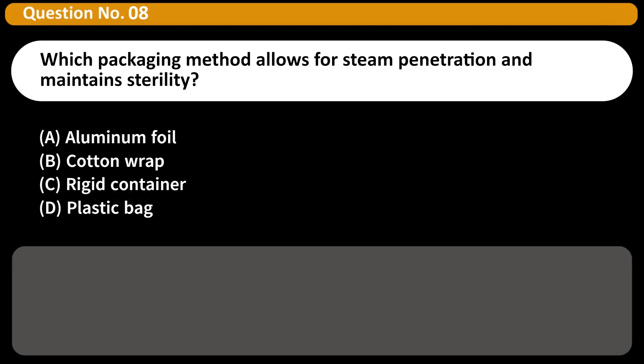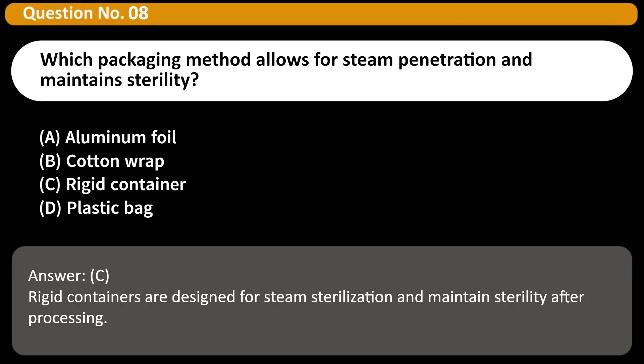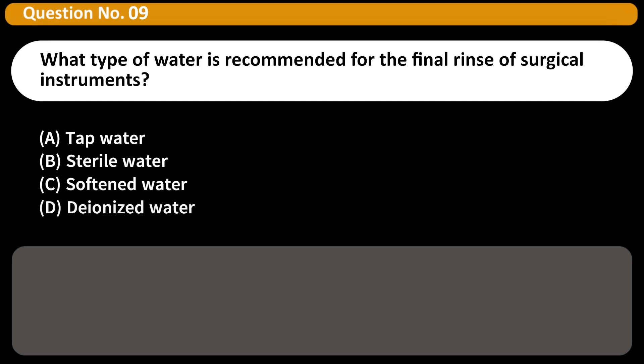Which packaging method allows for steam penetration and maintained sterility? A. Aluminum foil, B. Cotton wrap, C. Rigid container, D. Plastic bag. Answer C. Rigid containers are designed for steam sterilization and maintained sterility after processing.